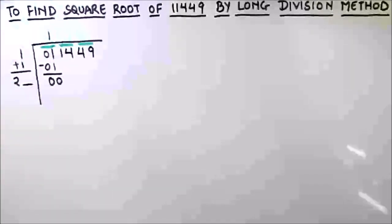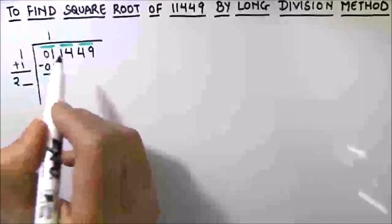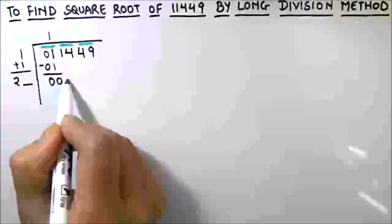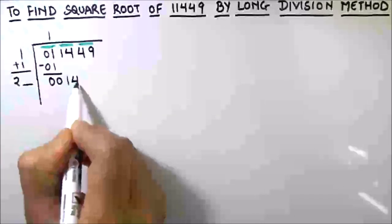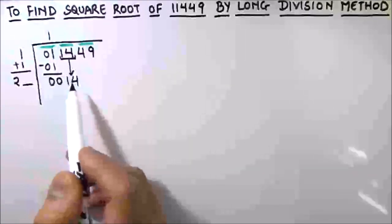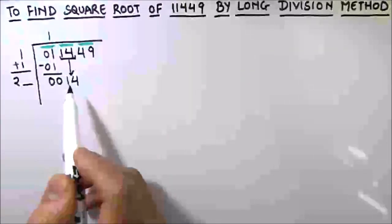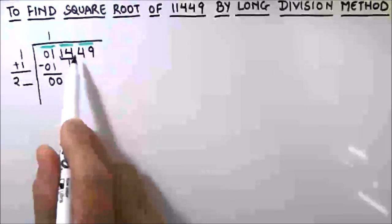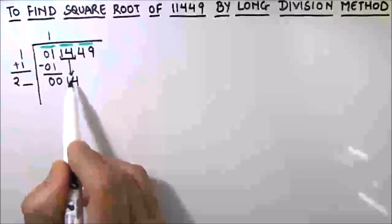Now the next step is to bring down the next pair of digits. So we have one four as our group, so we'll bring down that. You have to keep in mind that in this long division method we have to bring the digits down in groups. That's why we have made groups in the first step, so we have to bring down both the digits together: one four.